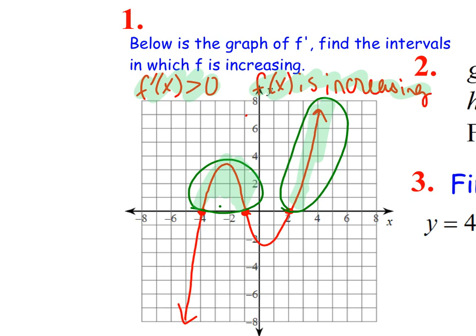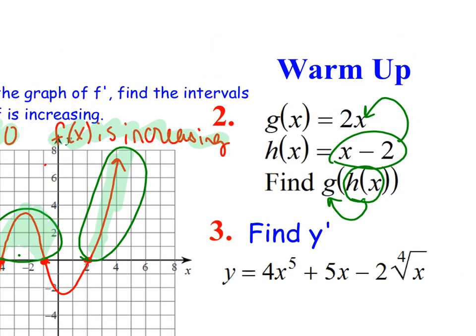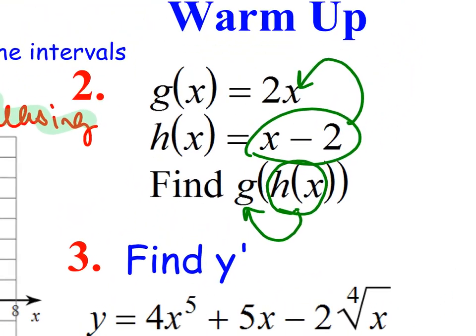Let's move on to the second one. We want to know what g(h(x)) is, which means we're going to take our h function and plug it into the g(x) function. So that will give you 2 times (x minus 2), otherwise known as 2x minus 4.